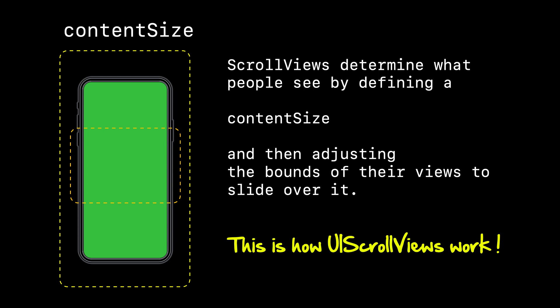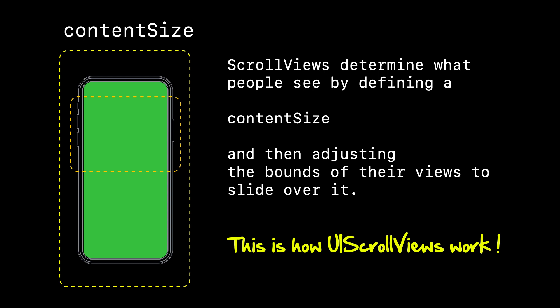This is the basis behind how UIScrollView works. By defining something called a content size — which determines what people see — and then adjusting the bounds to slide over it, you can give the illusion of a view scrolling by changing the bounds and sliding it up or down, up to the limit of the content size. That's really all there is to the UIScrollView and how it fundamentally works.